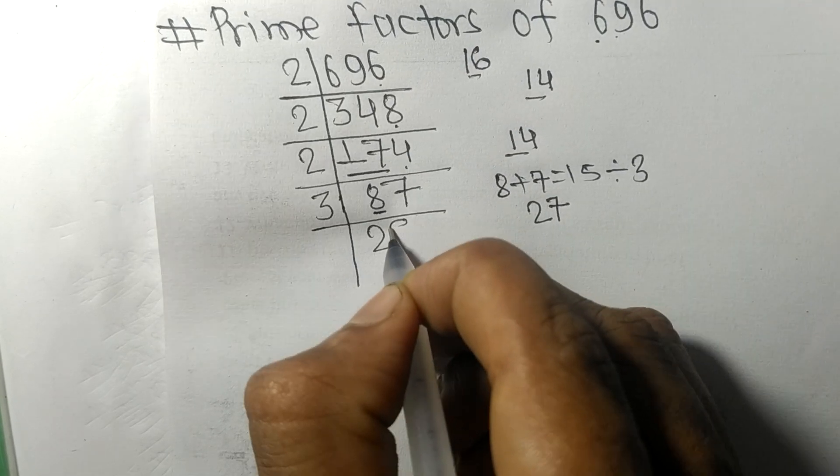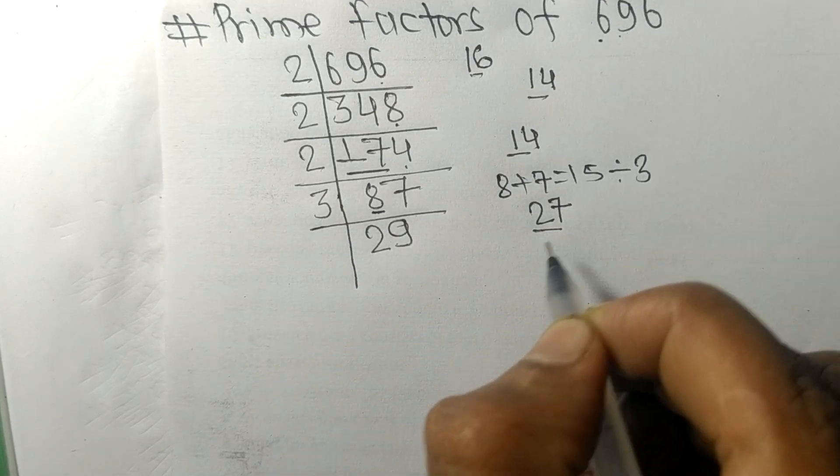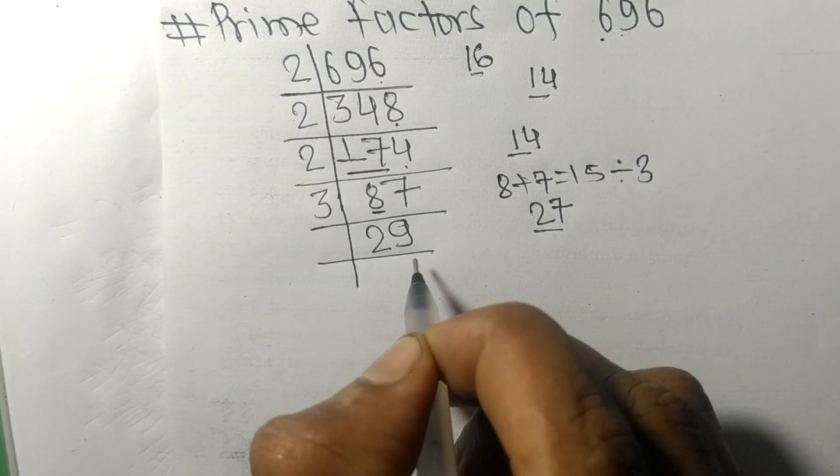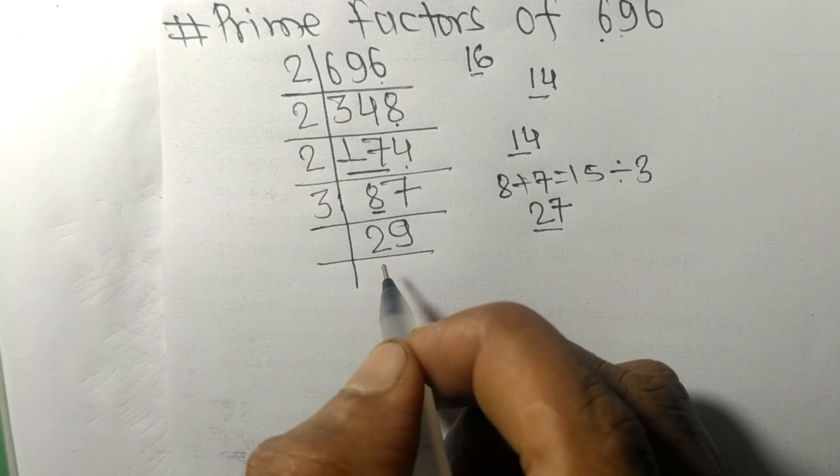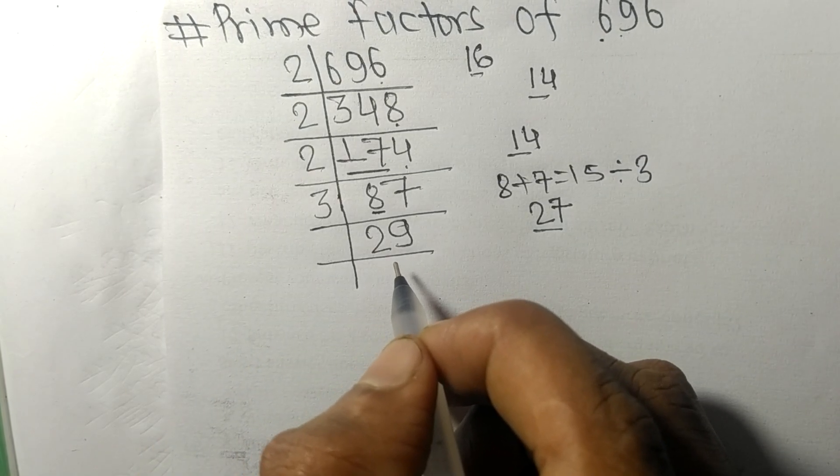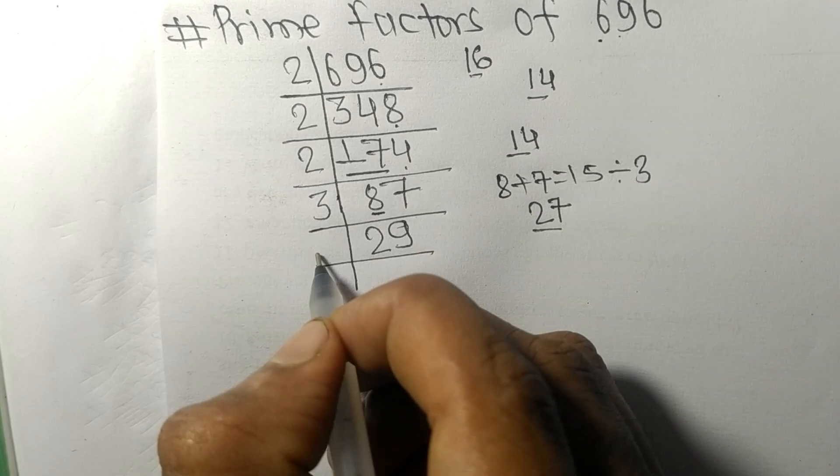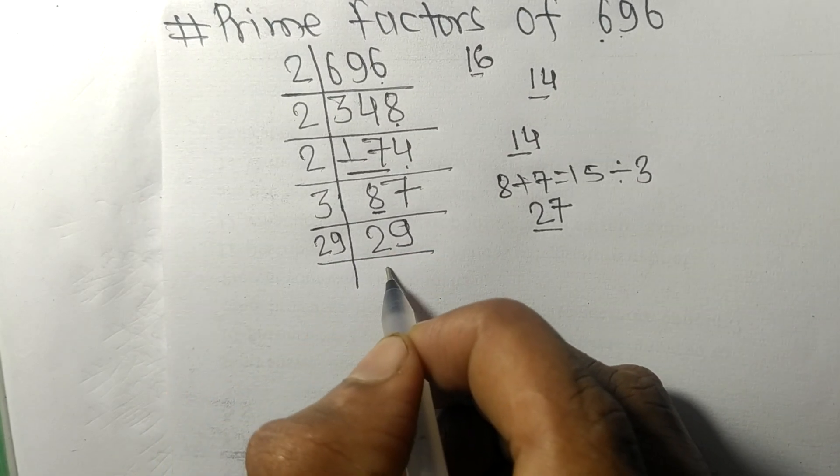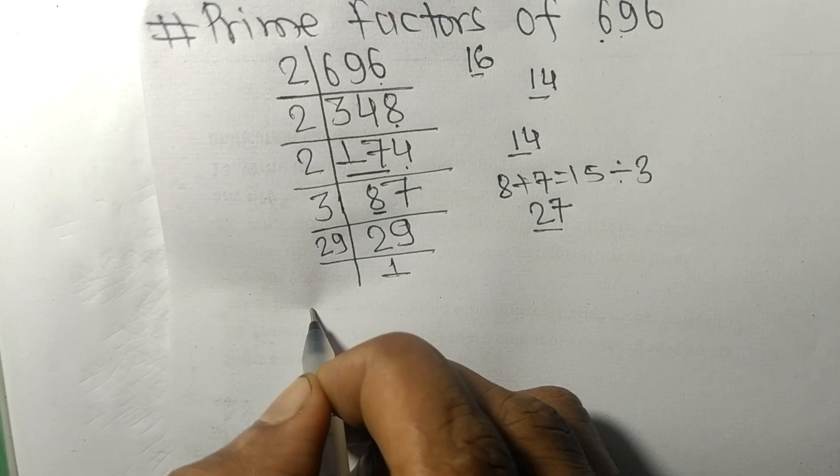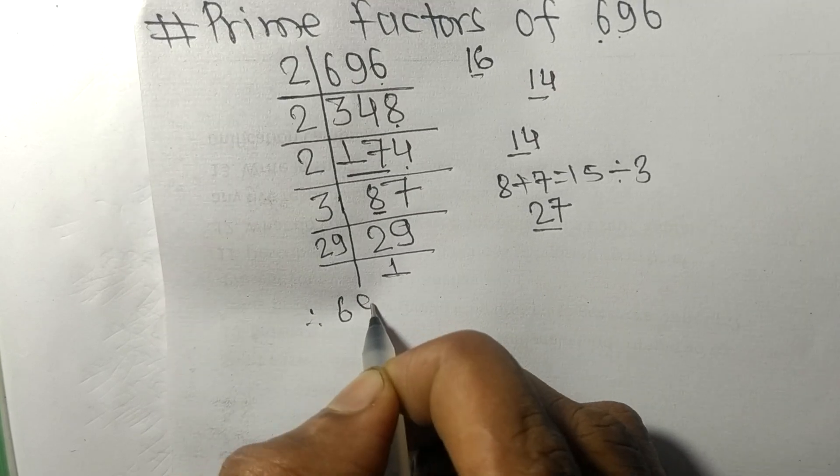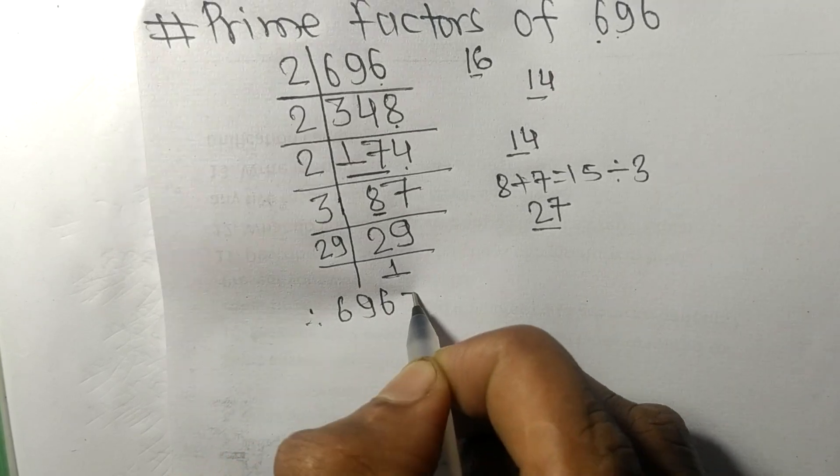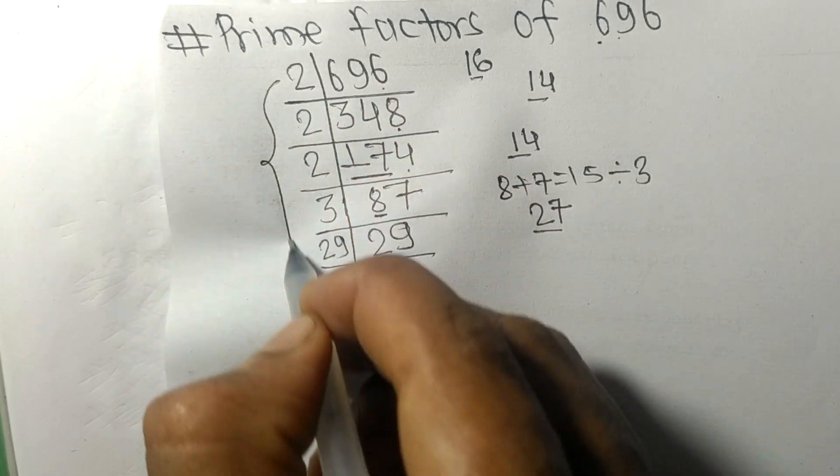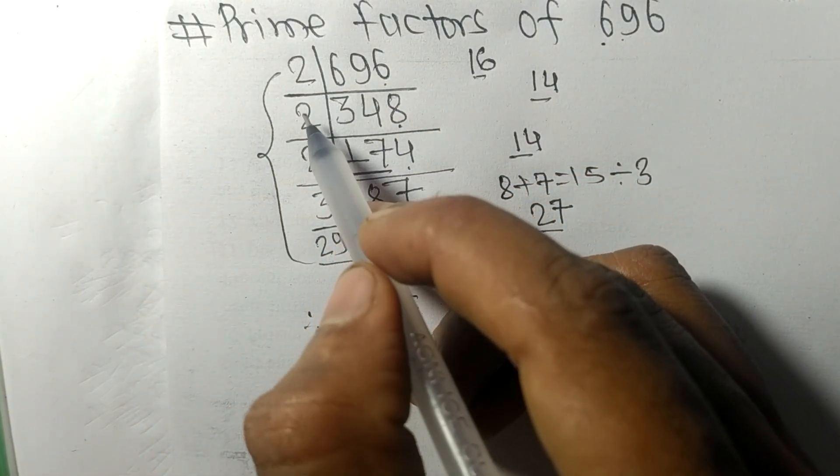So now we got 29 which is our prime number, so it is divisible by 29 itself and we get here 1. Therefore 696 equals - from this side it is 1, 2, 3 times 2.